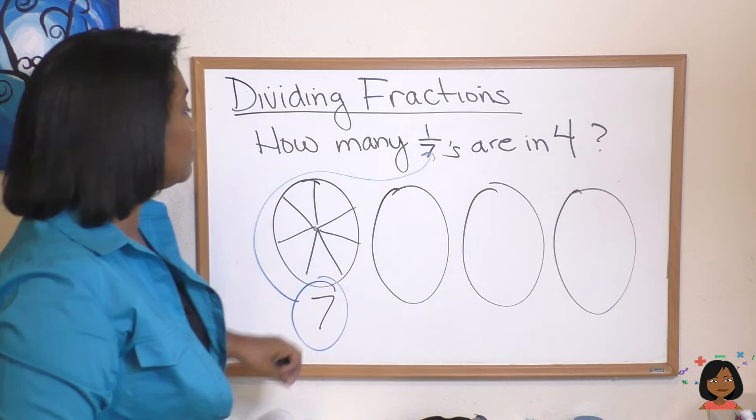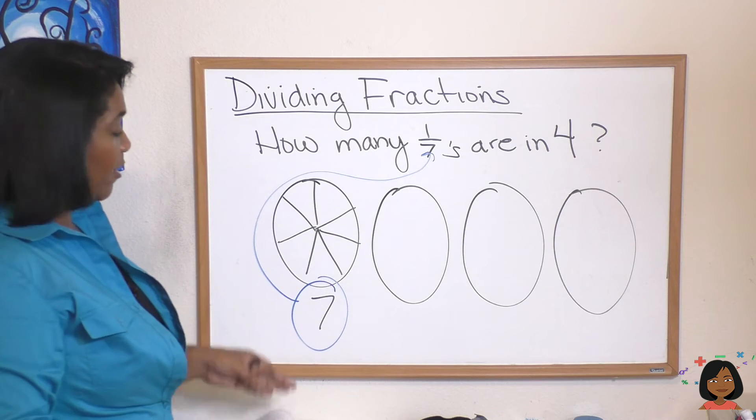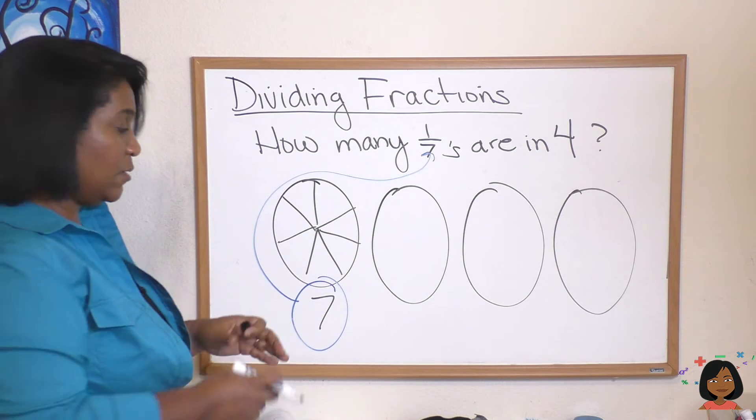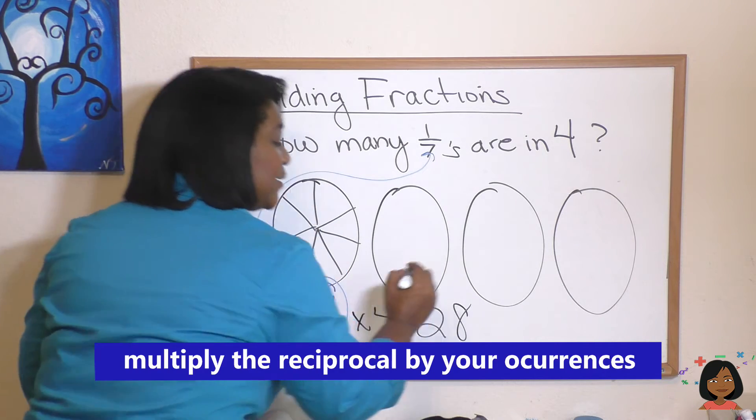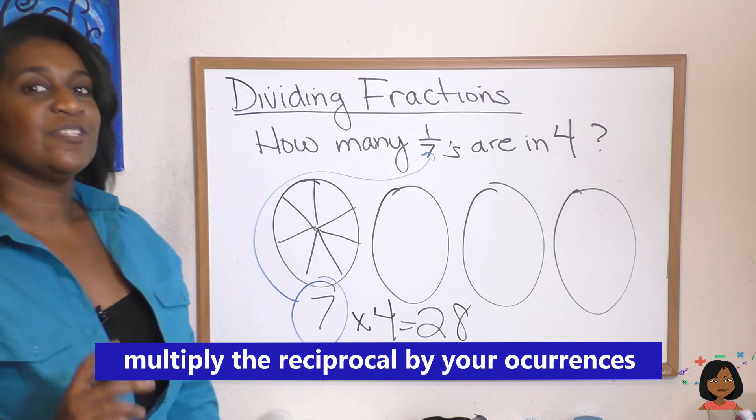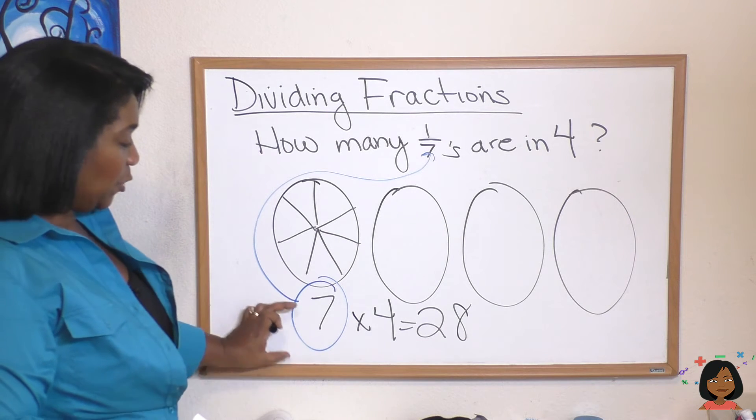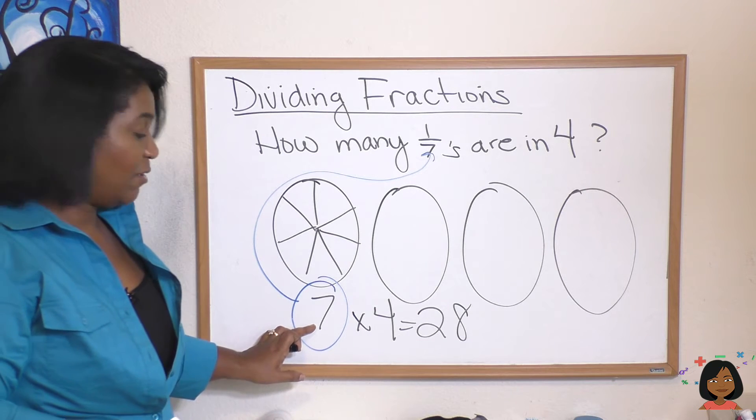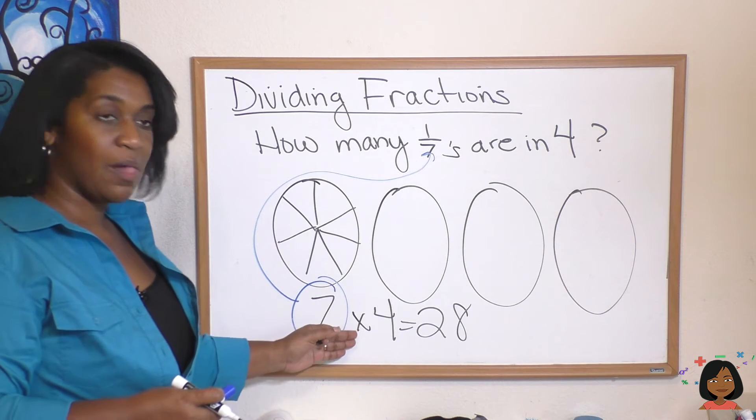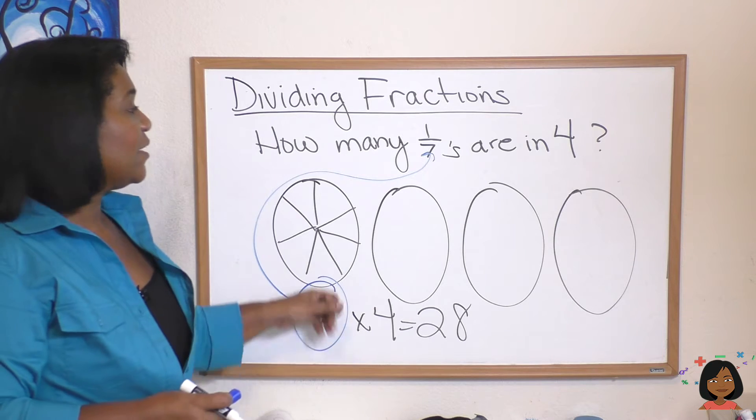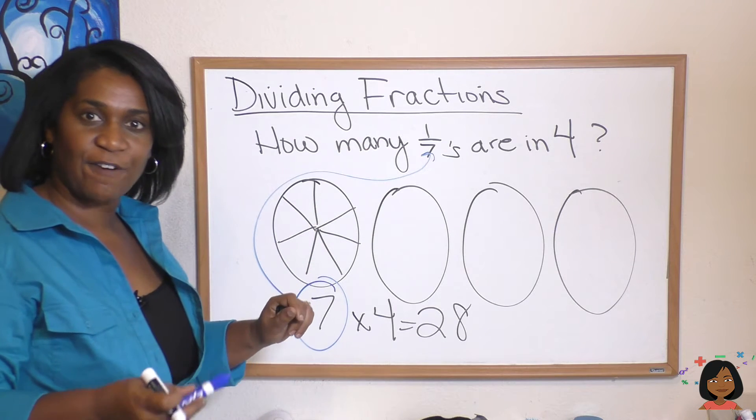Okay now how many one-sevenths are there in four? If there's seven in one we multiply this times four and we get 28. So the good news is we can use a reciprocal right? Seven is the reciprocal to one-seventh and we can use multiplication instead of division when dividing fractions.